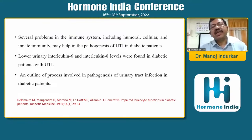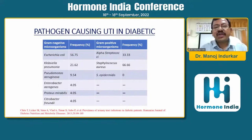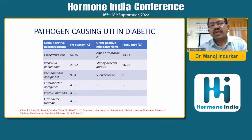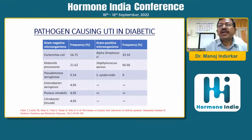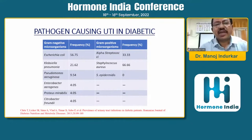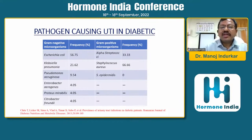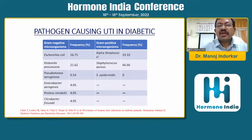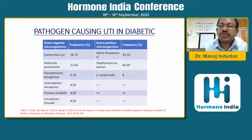There are problems in the immune system — humoral, cellular, or innate immunity — that may be responsible. As for organisms, you must know the causative organism because we need to give specific treatment for specific organisms, and there is a specific antibiotic for each. It is important to culture the urine and identify which organism is responsible. E. coli is the number one organism responsible for urinary infection. Subsequently, Klebsiella and Pseudomonas are organisms responsible for life-threatening complications with worst outcomes in diabetic patients. Gram-positive organisms like alpha-Streptococcus or Staph aureus may also be responsible for UTI.